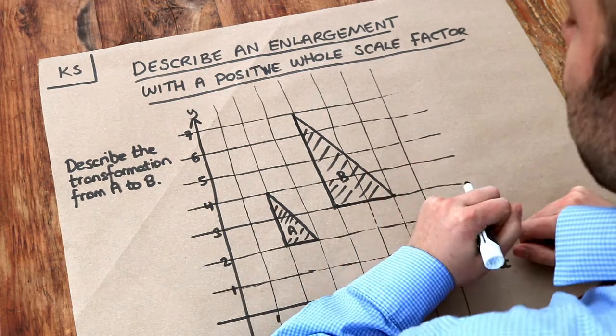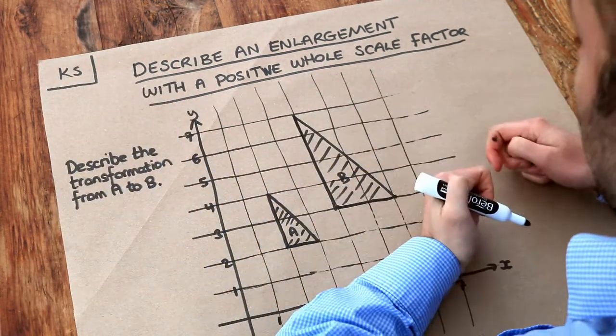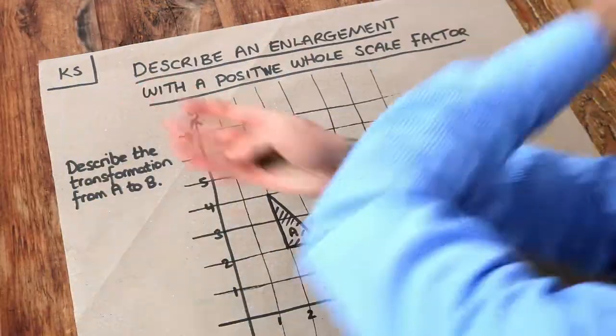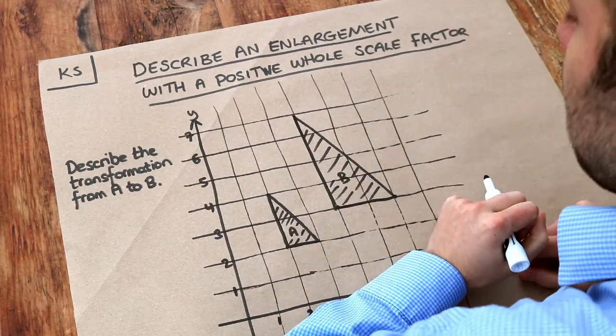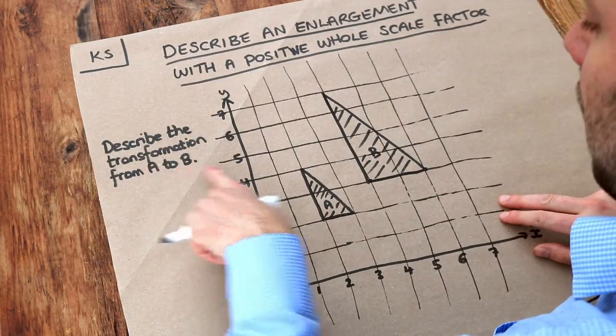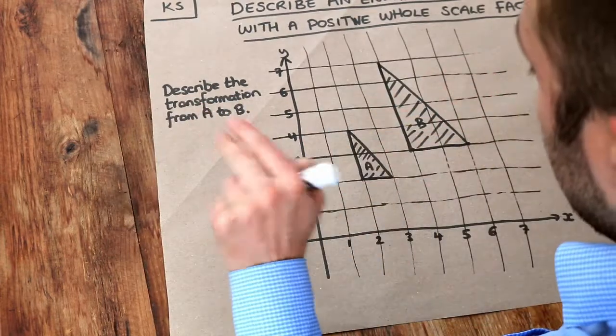Now an enlargement is a type of transformation where we either make the shape bigger or we make it smaller. Sometimes it's possible that it gets bigger or smaller but also flips at the same time, but we'll worry about those in a different video. So we can see if we want to describe the transformation from A to B, we can see that the shape has got larger. It's been enlarged.